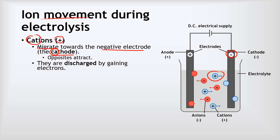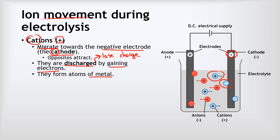When the cation gets to the cathode, it will be discharged — discharged literally means to lose your charge. So cations will be discharged at the cathode by gaining electrons. Why? Because cations are formed by losing electrons, so in order to be discharged and lose their charge, they've got to get those electrons back. When they do that, they will form atoms of a metal at the cathode. We can see that — those metal atoms have both lost their positive charge because they've been discharged.